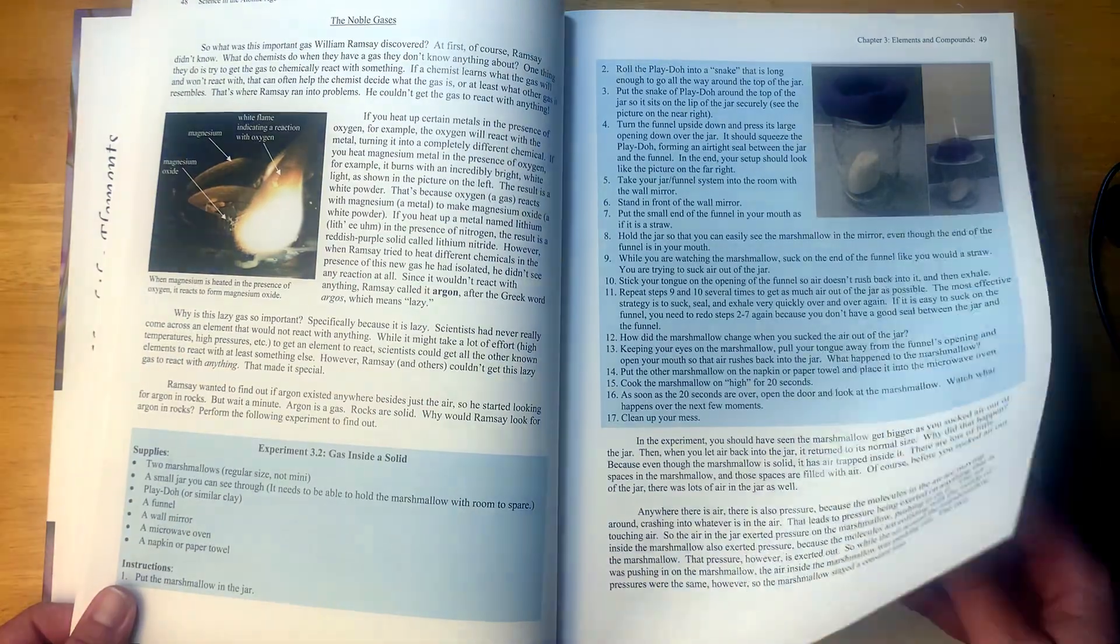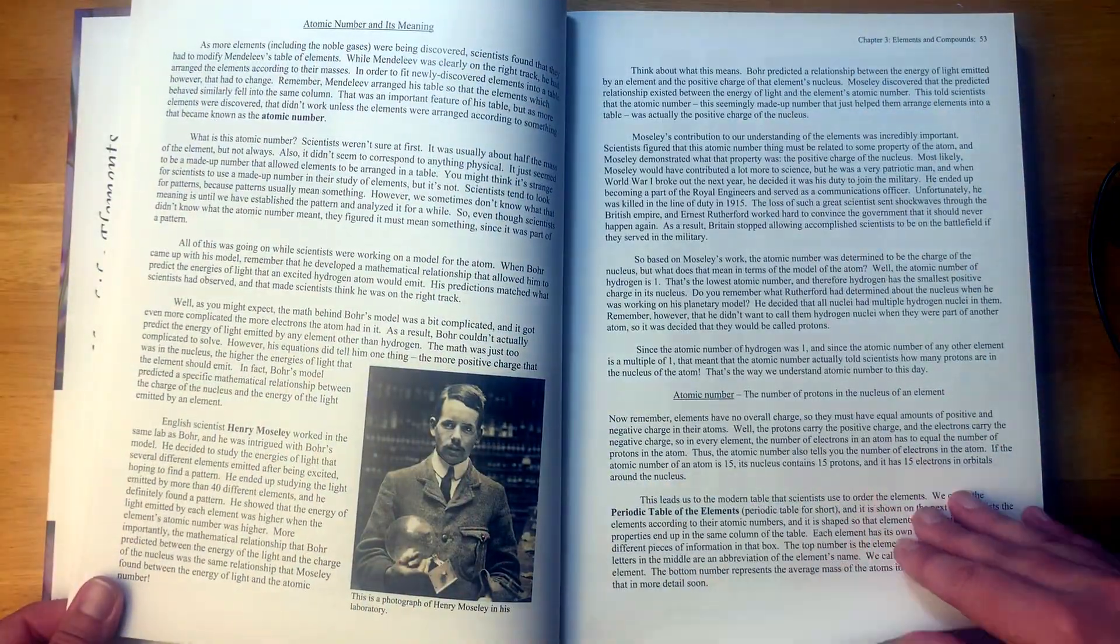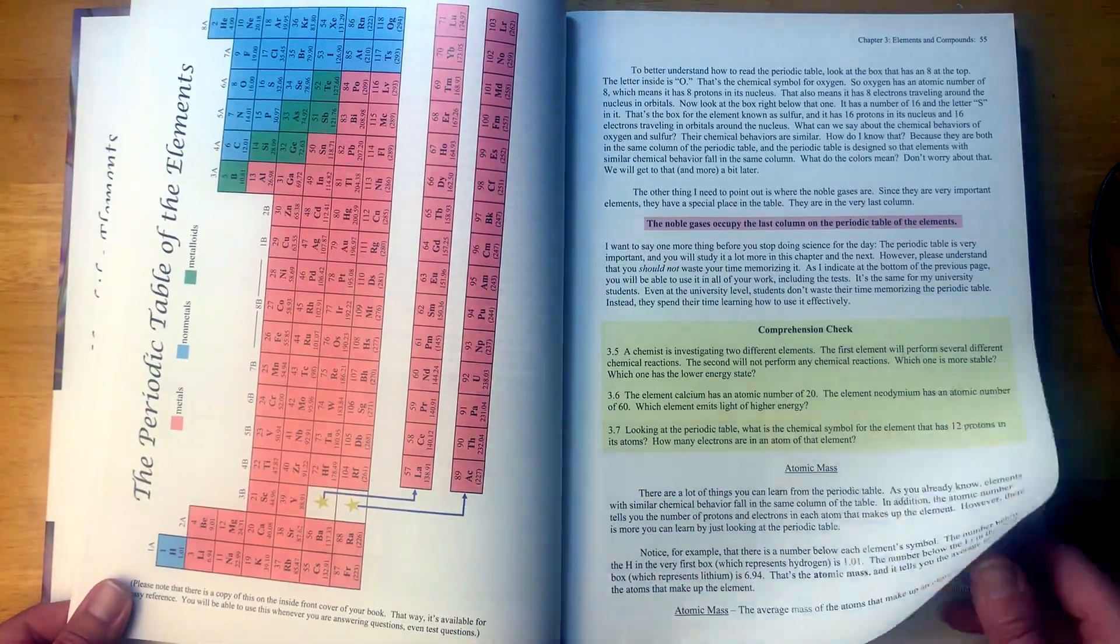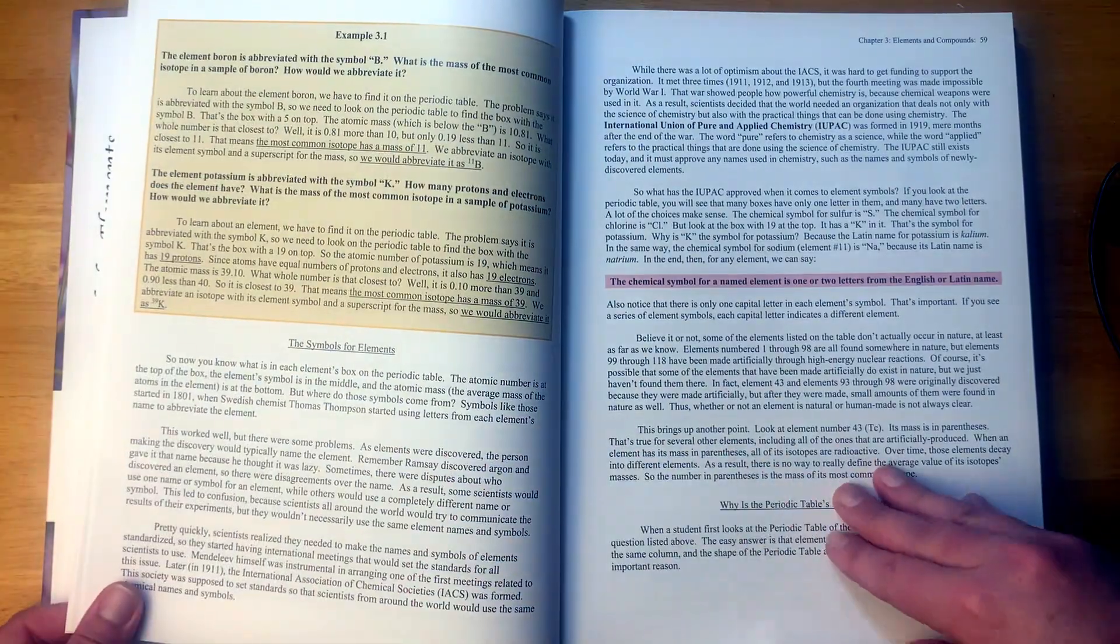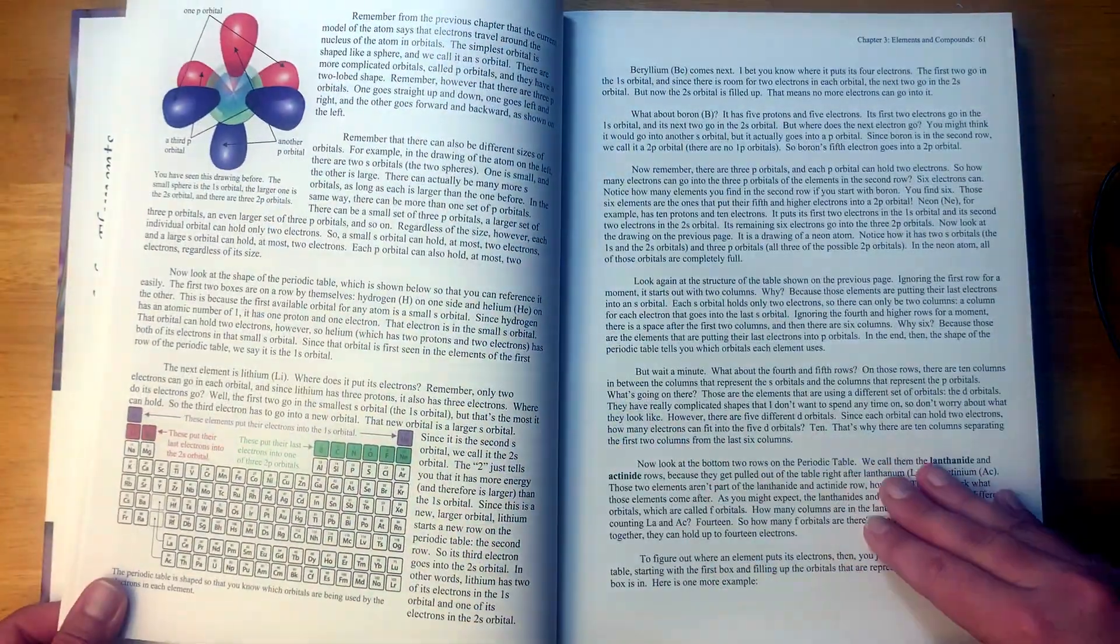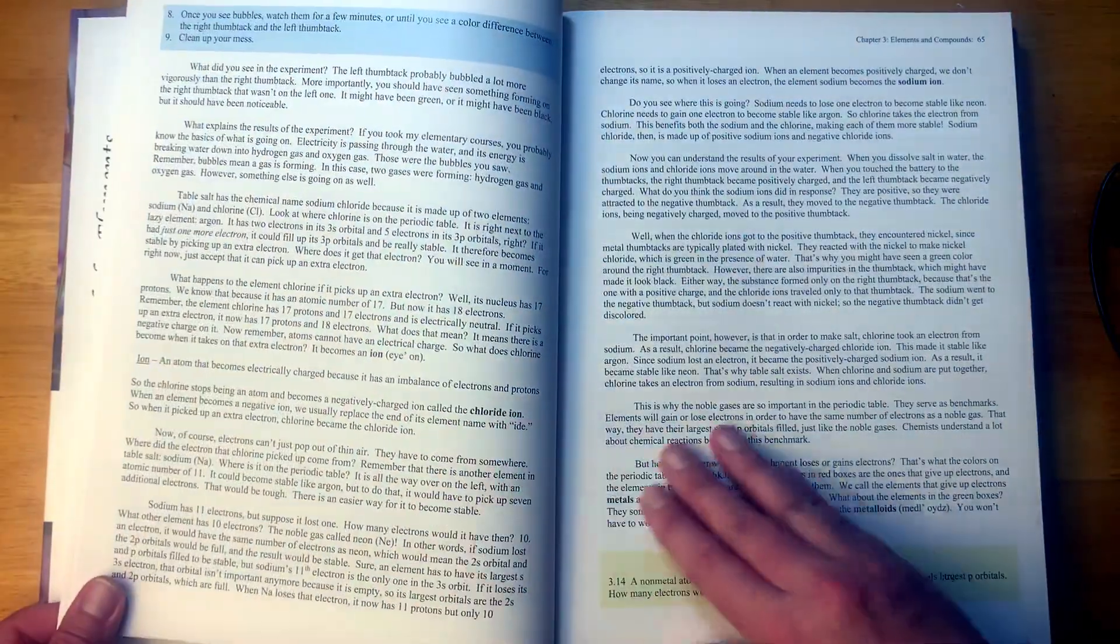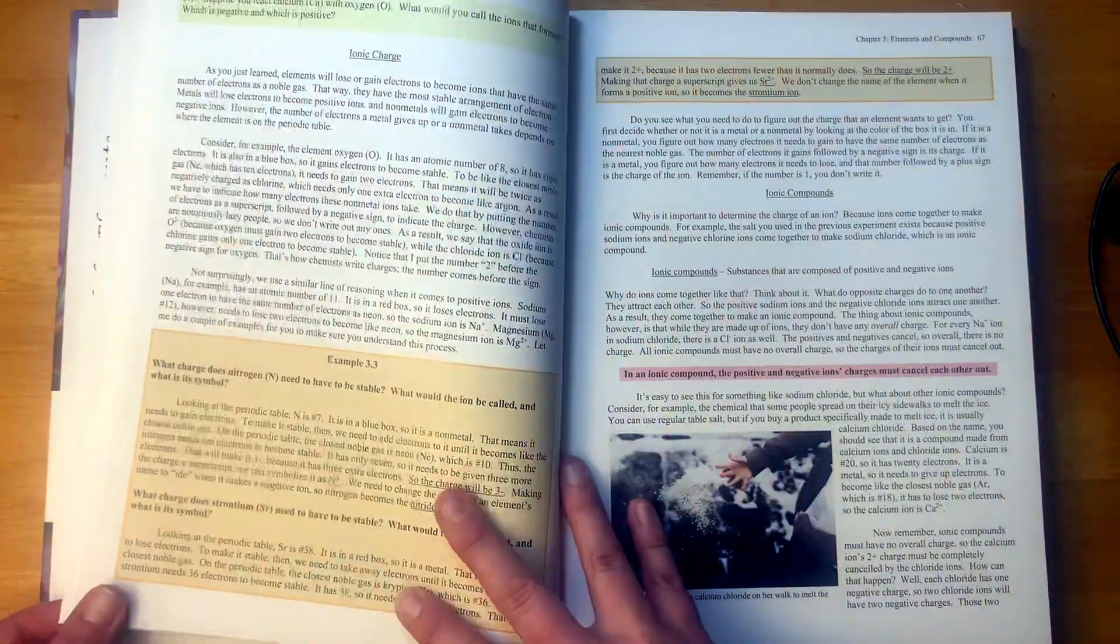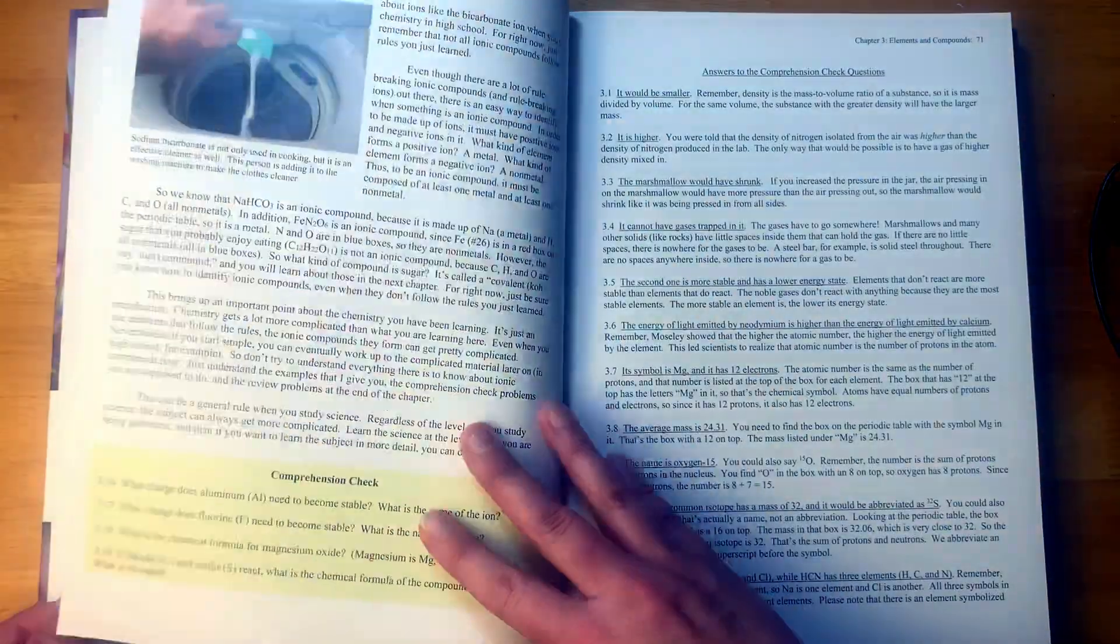So chapter two is definitely a little bit longer. And then chapter three, elements and compounds. So it is really important for this science that you are ready to do experiments throughout. So not just pick a day to do experiments, but just be ready when you do science to do experiments. I'm not sure if you would need to do this five days a week or if you could do it maybe three days a week. It seems like three days a week might be doable if you have a longer block.